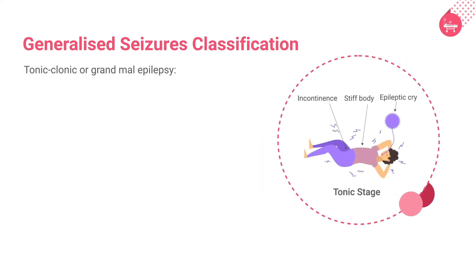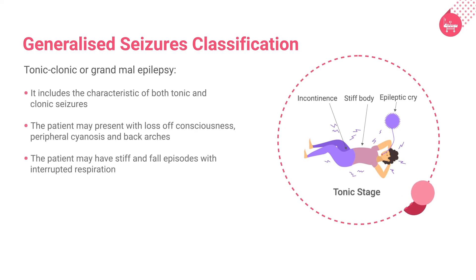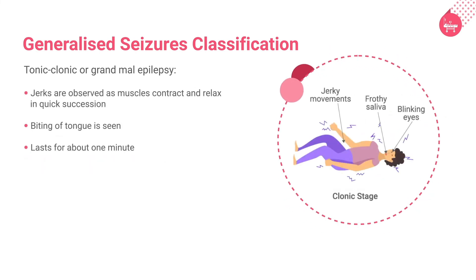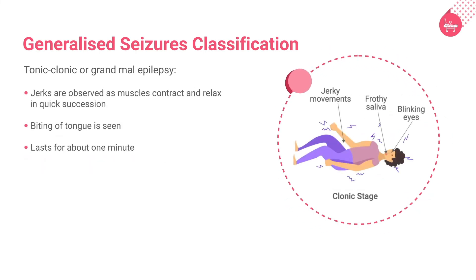Grand mal epilepsy, or tonic-clonic seizures, includes characteristics of both tonic and clonic seizures with increased severity. The patient may present with loss of consciousness associated with peripheral cyanosis and back arching. The patient becomes stiff and may have fall episodes associated with respiratory distress. Jerks are observed as quick succession of contraction and relaxation of muscles, and biting of the tongue is another common clinical presentation. This condition lasts for about one minute.